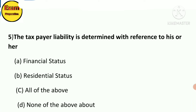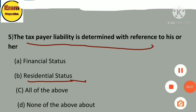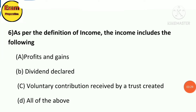MCQ 5: The taxpayer's liability is determined with reference to his or her — A. Financial Status, B. Residential Status, C. All of the above, D. None of the above. The answer is Residential Status. The taxpayer's liability is determined with reference to his or her residential status.